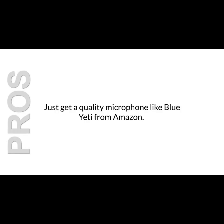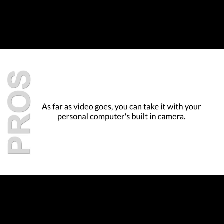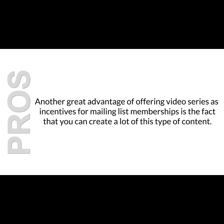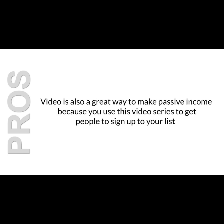Advantages. A video is very personal and immediate. Believe it or not, a video is relatively easy to make — you can do it yourself. Just get a quality microphone like a Blue Yeti from Amazon. For video, you can use your personal computer's built-in camera; the quality for most built-in webcams is actually quite good. Another great advantage is that you can create a lot of this type of content, since it only takes a few minutes to speak into a microphone in front of a camera. Video is also a great way to make passive income — use the video series to get people to sign up to your list, and if you chop them into small enough pieces, they get excited about your next email.